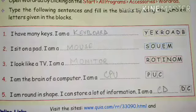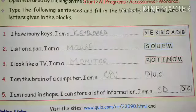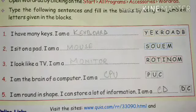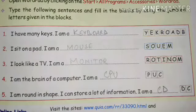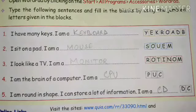Now let's take the last exercise of the chapter. You have to unscramble the words — it's a jumble word exercise. The first one is: 'I have many keys, I am a...' — you have to write the correct spelling, and the correct spelling is keyboard.